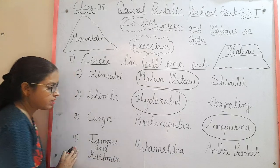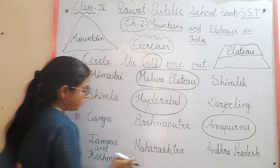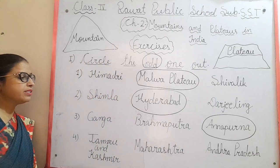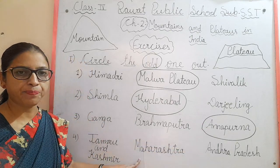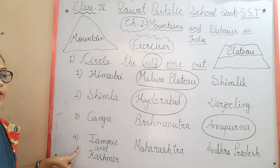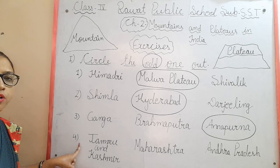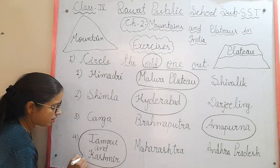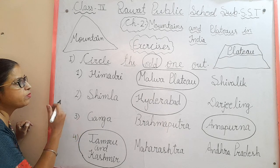Fourth set: Jammu and Kashmir, Maharashtra, and Andhra Pradesh. Maharashtra and Andhra Pradesh are states, but Jammu and Kashmir is not a state anymore — it is now a Union Territory. So Jammu and Kashmir is the odd one out. Now students, we will do the second exercise.